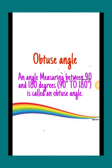Obtuse angle. An angle measuring between 90 and 180 degree, means greater than 90 degree and less than 180 degree, are called obtuse angles.